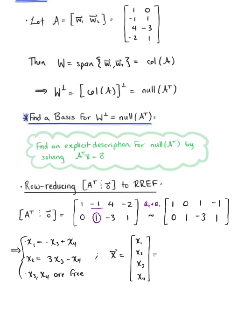And we know that x sub 1 is being defined as minus x sub 3 plus x sub 4. That x sub 2 is being defined as 3 times x sub 3 minus x sub 4. x sub 3 is a free variable, so it's just itself. And x sub 4 is a free variable, so it's just itself as well.